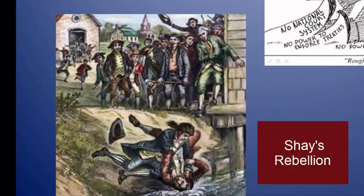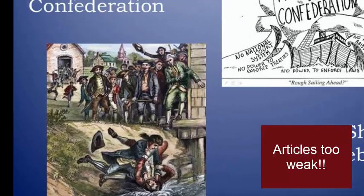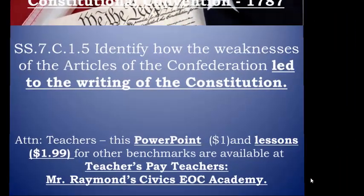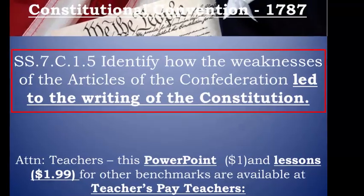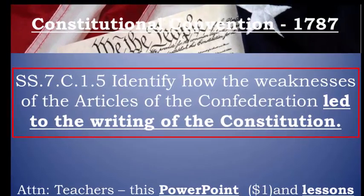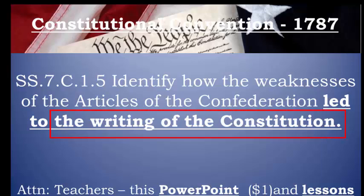Last time we also talked about how Shays' Rebellion finally demonstrated to Americans that the Articles were just too weak. This leads us back to the same benchmark we began last time, which says to identify how weaknesses of the Articles of Confederation led to the writing of the Constitution. This time we're going to focus more on the writing of the Constitution.